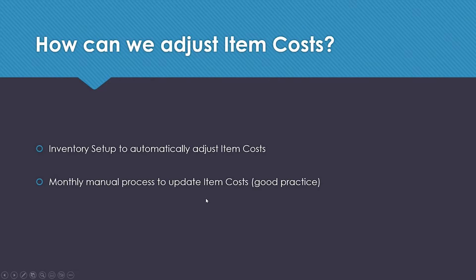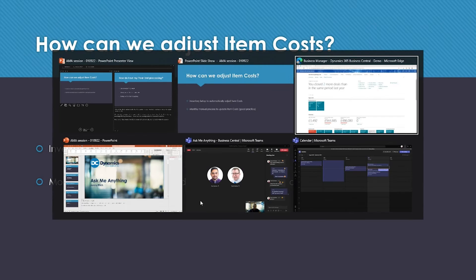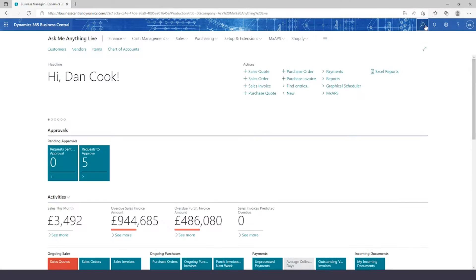As good practice, we recommend that once a month you go in and manually process and update your item costs. To do this, you can come into the system.